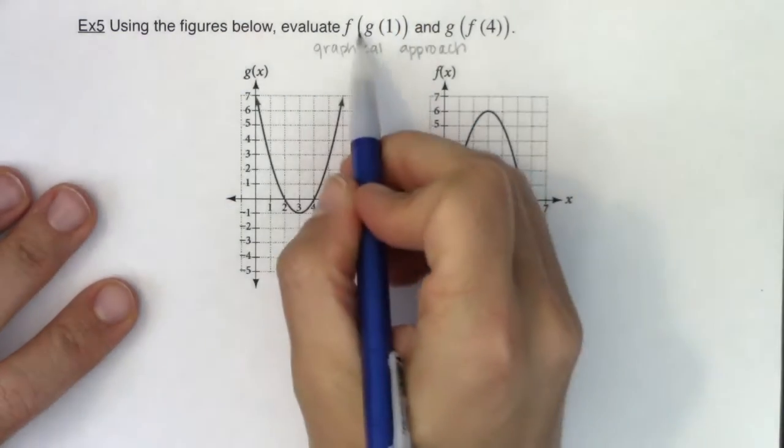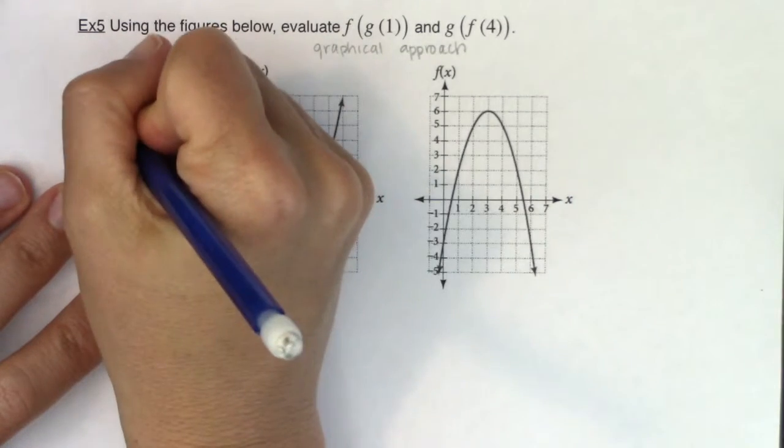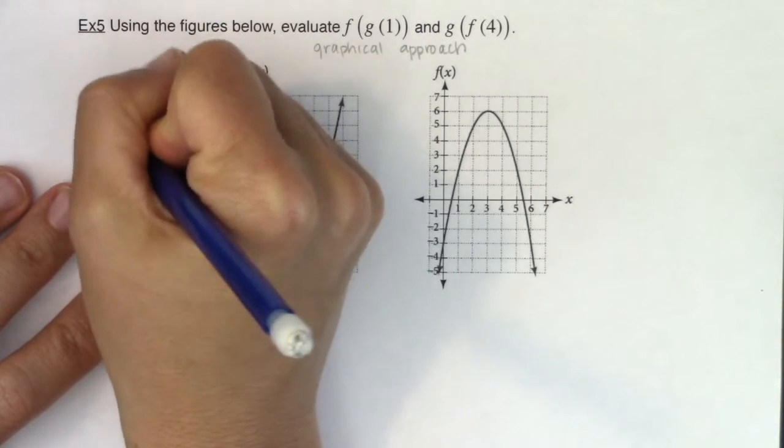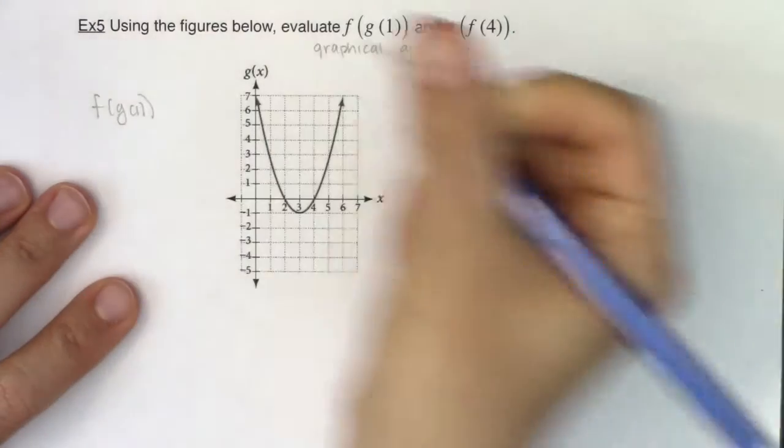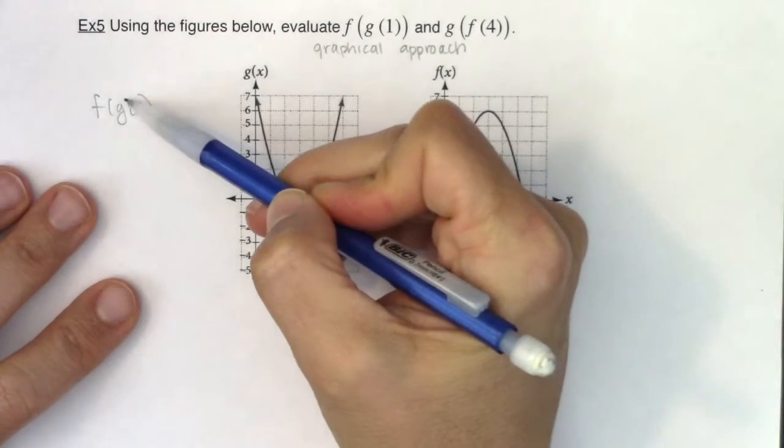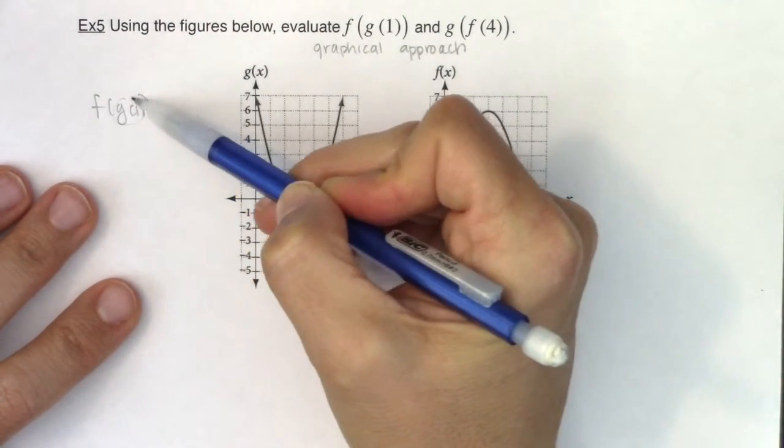Alright, so let's see how we're doing. I want f of g of 1. So let me head over here and let's see if we can find f of g of 1. Okay, so the first thing I need to do is find g of 1.